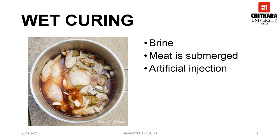In dry curing, a ham with bone takes almost 45 days to cure, but in the case of wet curing, it takes 20 to 23 days, and if injected, it takes only 6 to 7 days. Fresh brine should be made for each batch of cured meat. Do not reuse brines because they are diluted and contaminated with juices from the first batch of meat. Once wet cured, the product is rinsed and left to dry in cold storage for over 12 hours, helping to form a pellicle, which is essential prior to smoking and ensures that the smoke adheres to the surface.